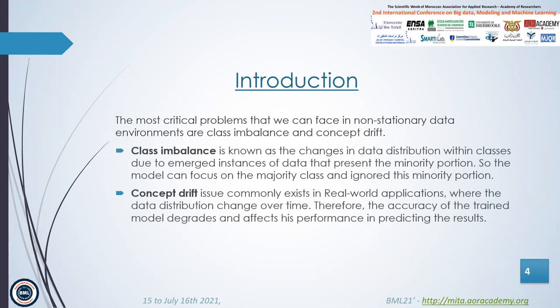The most critical problems that we can face in non-stationary data environments are class imbalance and concept drift. Class imbalance is known as the changes in data distribution within classes due to emerging instances of data that represent the minority class. So the model can focus on the majority class and ignore the minority class. Concept drift commonly exists in real-world applications where data distribution changes over time. Therefore, the accuracy of the trained model degrades and affects its performance in predicting results.